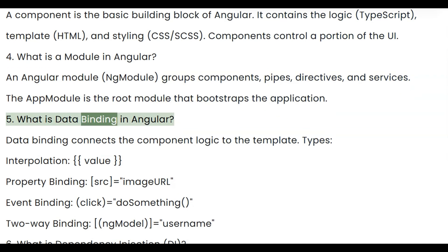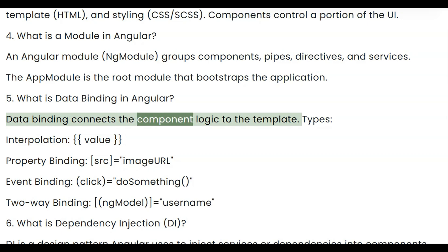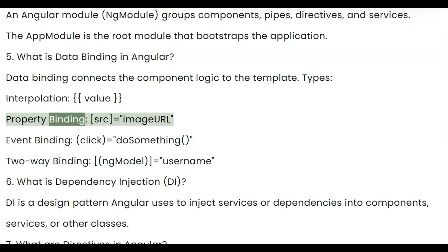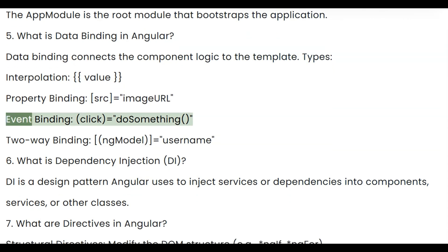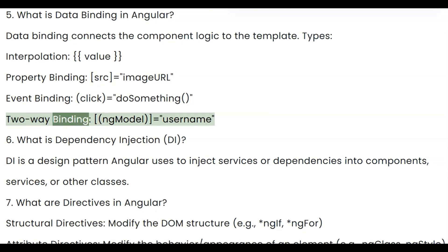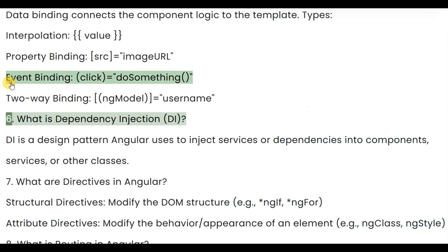Question 5: What is data binding in Angular? Data binding connects the component logic to the template. Types include interpolation, property binding, event binding, and two-way binding using ngModel.